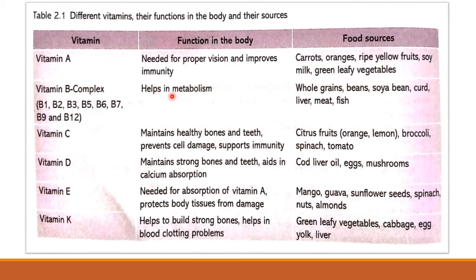Vitamin B helps in converting food and drink into energy. The food sources of vitamin B complex are whole grains, beans, soy bean, curd, liver, meat and fish. Vitamin C maintains healthy bones and teeth, prevents cell damage and supports immunity. Food sources of vitamin C include citrus fruits, orange, lemon, broccoli, spinach and tomato.